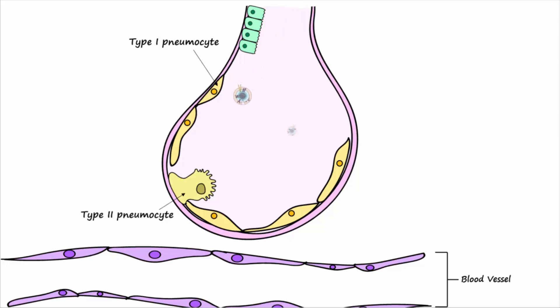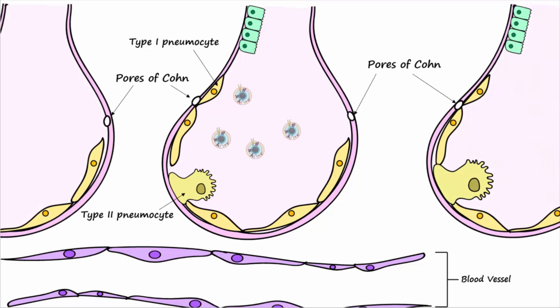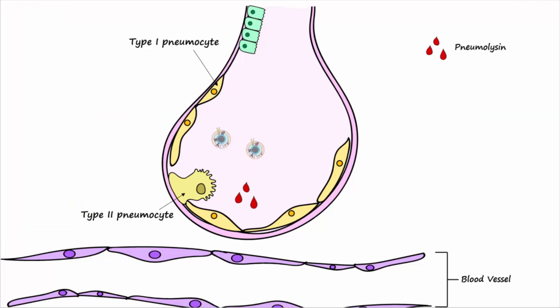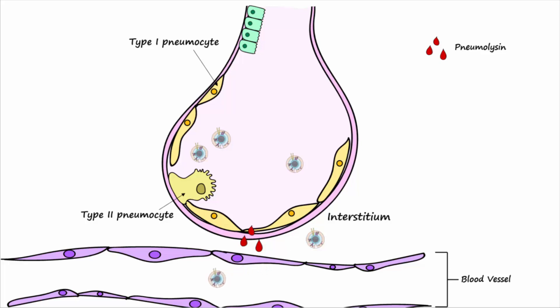In addition to infecting the alveolar epithelial cells like type 2 pneumocytes, the bacteria will also multiply in the alveoli. They may also invade adjacent alveoli by passing through the pores of Cohn. The bacteria secrete a cytotoxin called pneumolysin which binds to cholesterol in the plasma membranes of host cells to form holes and cause cell lysis. Pneumolysin also triggers the bacteria to divide inside the alveoli and promotes penetration of the bacteria into the lung interstitium and into the blood.